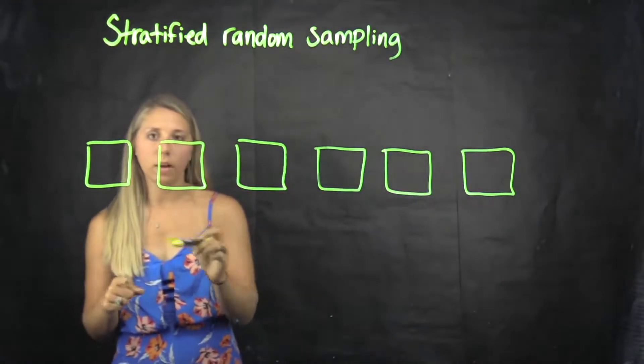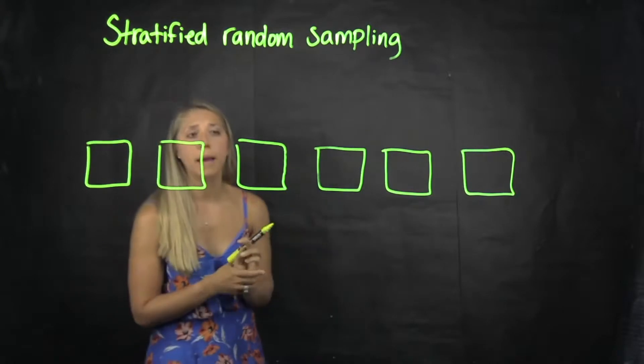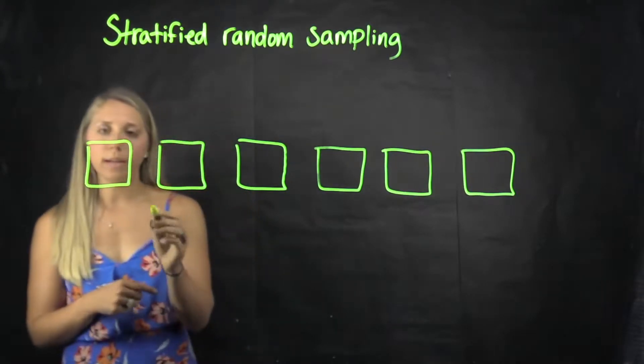So there are 1, 2, 3, 4, 5, 6 rooms in the math hallway.